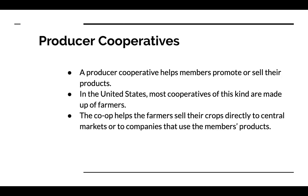The last type of co-op is a producer co-op. A producer cooperative helps members promote or sell their products. In the United States, most co-ops of this kind are typically made up of farmers. The co-op helps farmers sell their crops directly to central markets or to companies that use the members' products. Some co-ops, such as Ocean Spray Cranberry, market their products directly to consumers but are technically classified as a co-op themselves.